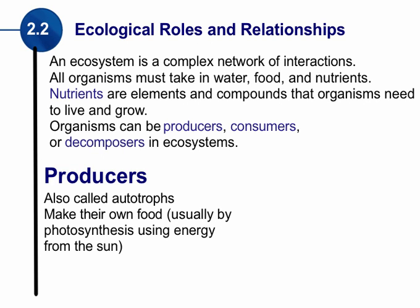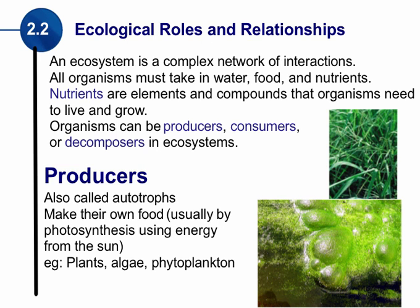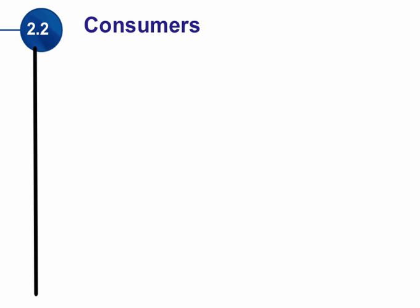Producers usually make their own food by photosynthesis, using energy from the sun. If you think about photosynthesis and the types of species that do photosynthesis, we're talking about plants. Or, if we are looking at a water ecosystem, algae and phytoplankton. These organisms that can create their own food using energy from the sun we call producers. If an organism is not a producer, it may actually be a consumer.